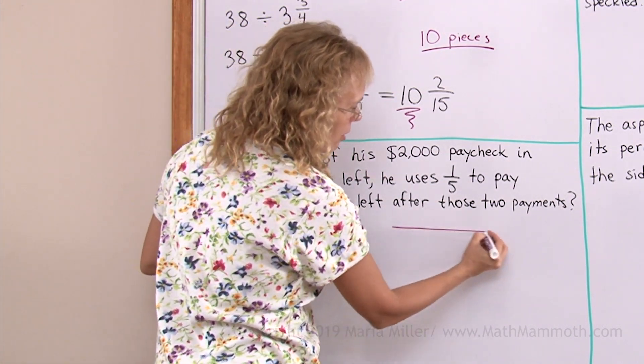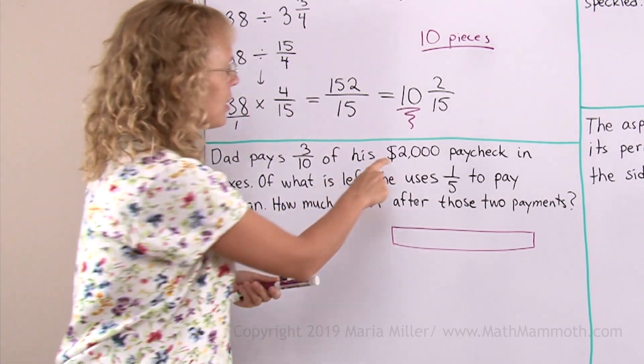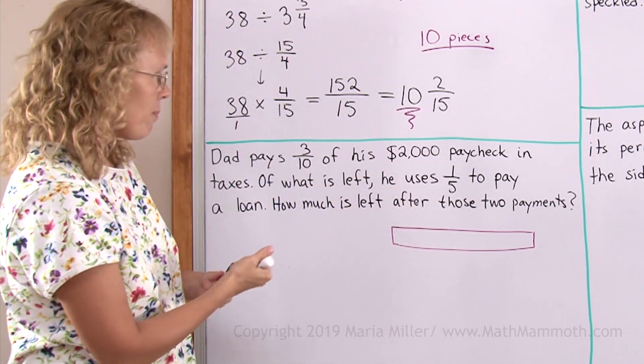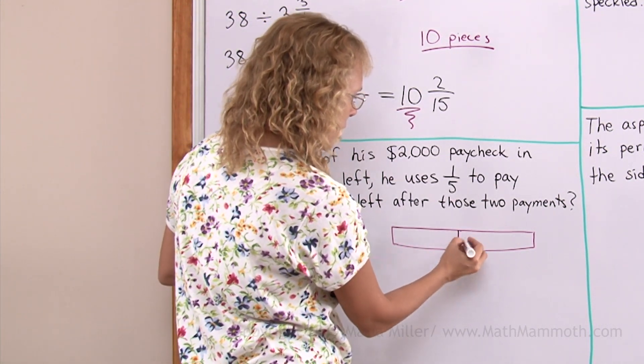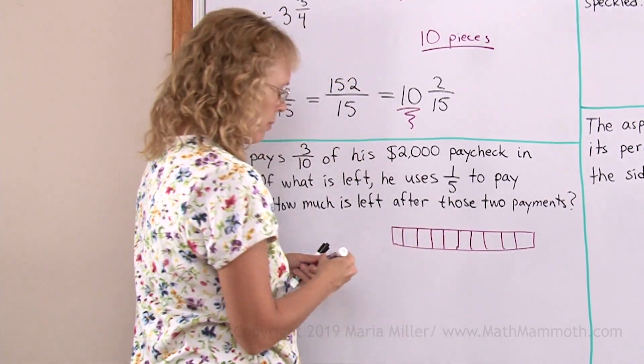I will draw a bar to represent a total. What total is there? Well, it's this total here, the two thousand, and then that would be divided into ten parts.